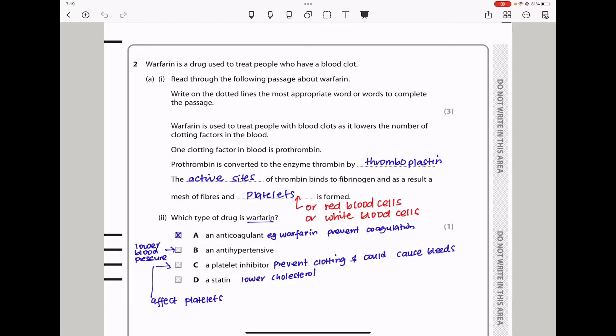So I'm going to use this information to fill in the spaces. They begin by saying warfarin is used to treat people with blood clots as it lowers the number of clotting factors in the blood. One clotting factor in blood is prothrombin. Prothrombin is converted to the enzyme thrombin by thromboplastin. The active sites of thrombin, which is the enzyme, they bind to fibrinogen, and as a result, a mesh of fibers and platelets is formed. In this case, you could say a mesh of fibers and some of these blood cells. You could say red blood cells or white blood cells. That could be acceptable as well.